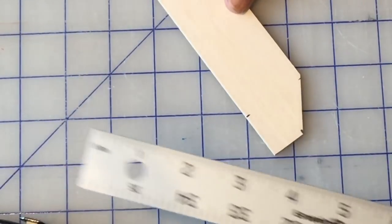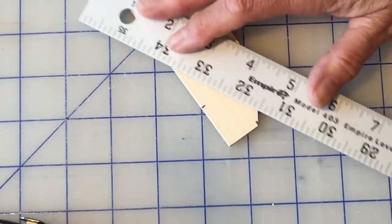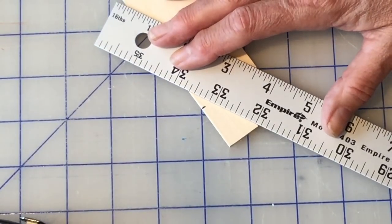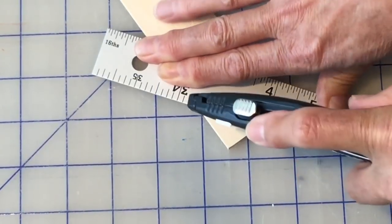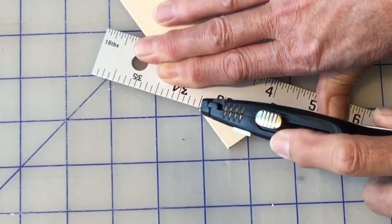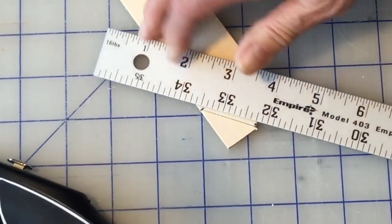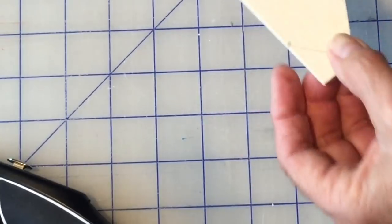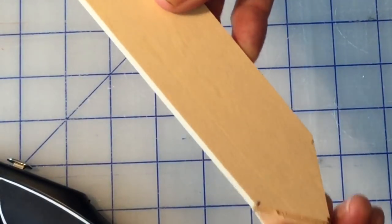And the same for the other side. I'm just going to turn this so it's easier to angle in the camera. And again line up your marks. Do scores, and that should just pop right off.